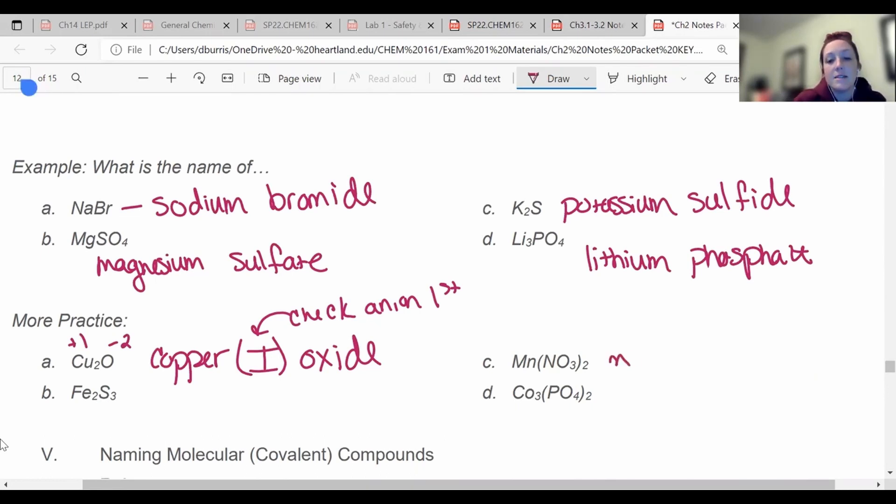All right. I'm gonna do this one over here. Mn is manganese, not to be confused with magnesium. Manganese is a transition metal. So I need to have a Roman numeral and NO3, notice these parentheses. NO3 should be on my polyatomic ion chart and it is, it is called nitrate. All right. So what was manganese's charge? Well I said check the anion first, right? So nitrate was negative one. And I have two nitrates here. So if I have two nitrates, that means it's negative two. So that must mean manganese is plus two. Now you could also check the reverse crisscross, right? Two would have gone up there and one would have gone up there. It's manganese two nitrate.